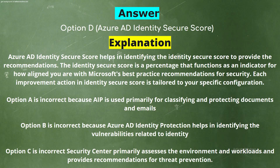Each improvement action in Identity Secure Score is tailored to your specific configuration. Option A is incorrect because Azure Information Protection is used primarily for classifying and protecting documents and emails. Option B is incorrect because Azure AD Identity Protection helps in identifying vulnerabilities related to identity. Option C is incorrect — Security Center primarily assesses the environment and workloads and provides recommendations for threat prevention.